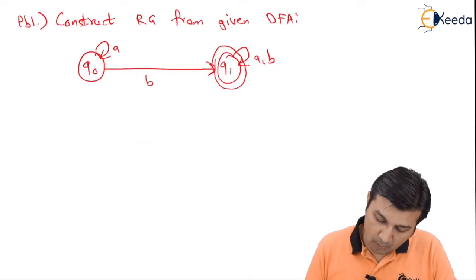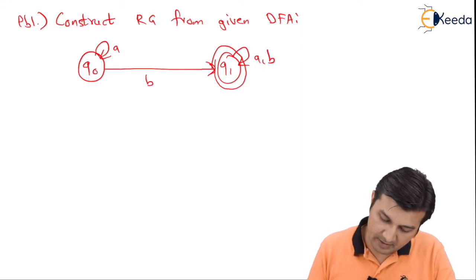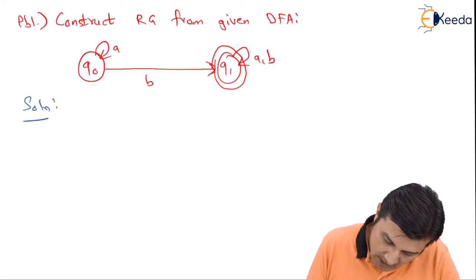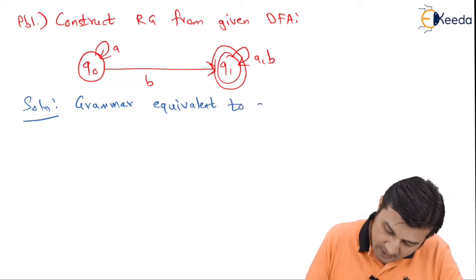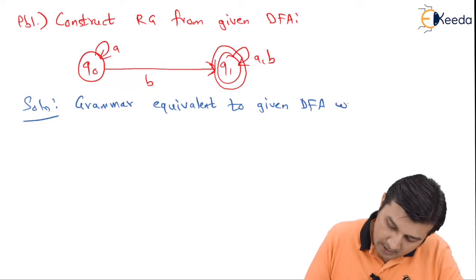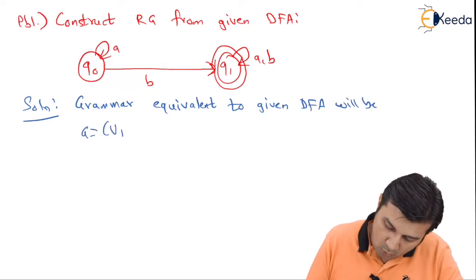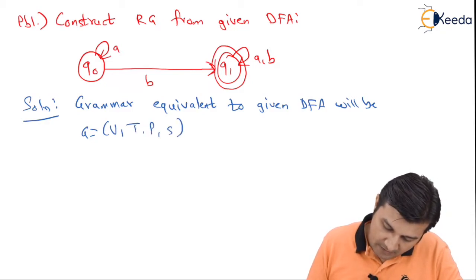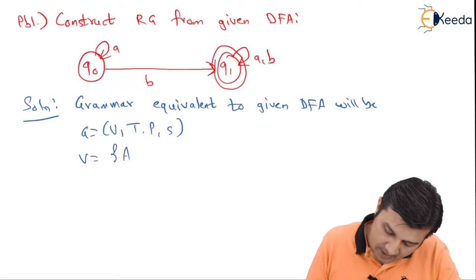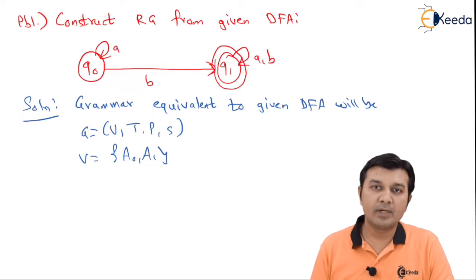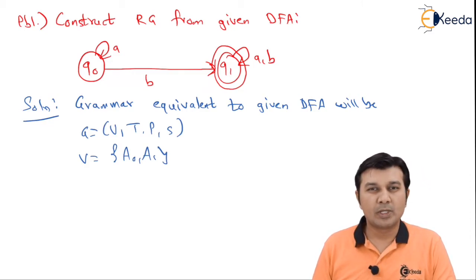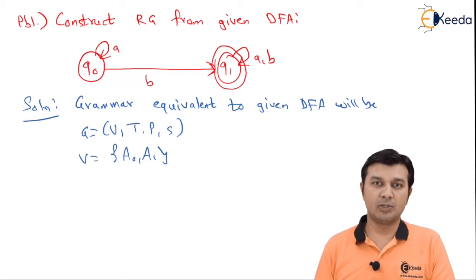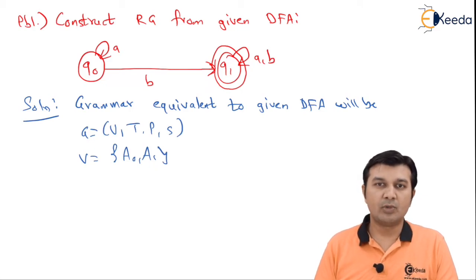Let us come to the problem and immediately understand the working of these rules. The problem says: construct the regular grammar for the given DFA. Jotting down the solution, my grammar equivalent to the given DFA will be G = (V, T, P, S), where I am going to rename the variables as A0 and A1. My variables are going to be A0 and A1 — A0 is nothing but Q0 and A1 is Q1. You can also keep it as Q0 and Q1 but it looks very weird when writing production rules, so we replace them by A0, A1, A2, A3 and so on.